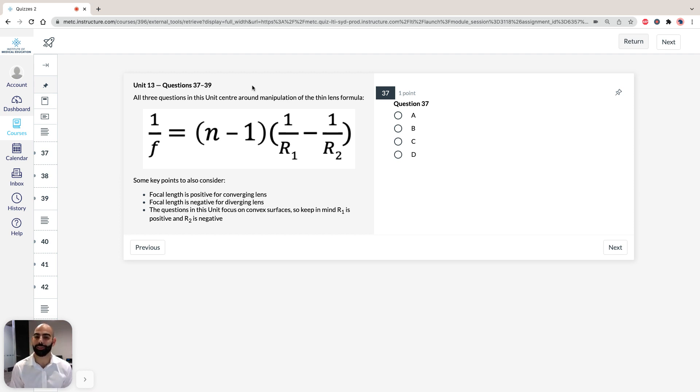In this unit, we're going to take a look at the thin lens formula. Now, lucky you, all you need to know is how to manipulate this formula, and just a couple of points about the sign convention for the radius of curvature for convex and concave surfaces. Now, ACE has been nice here.